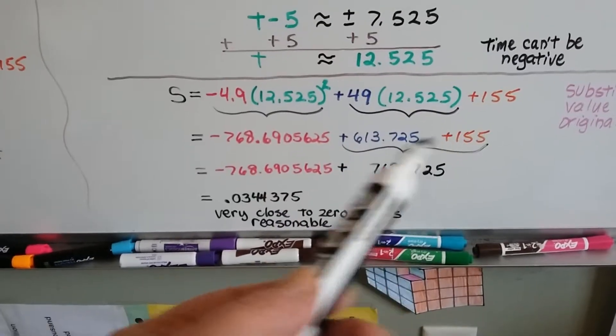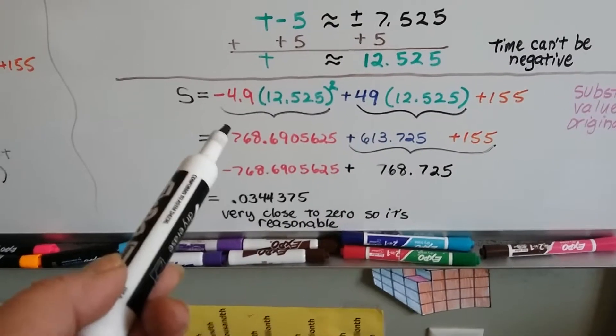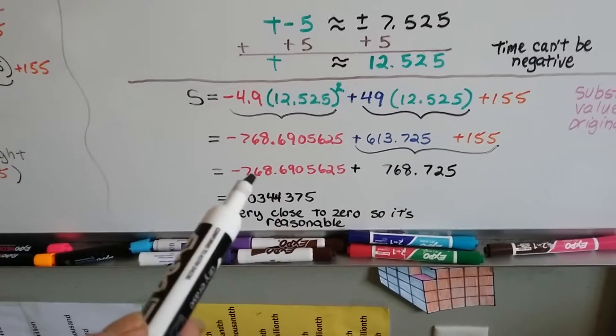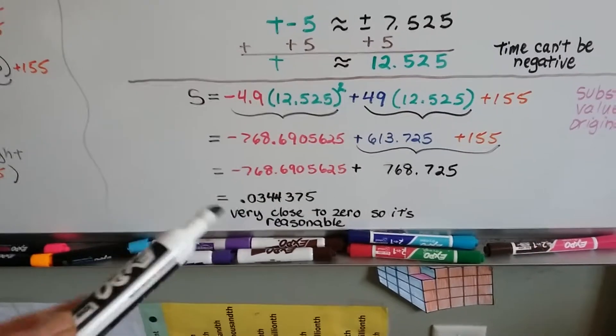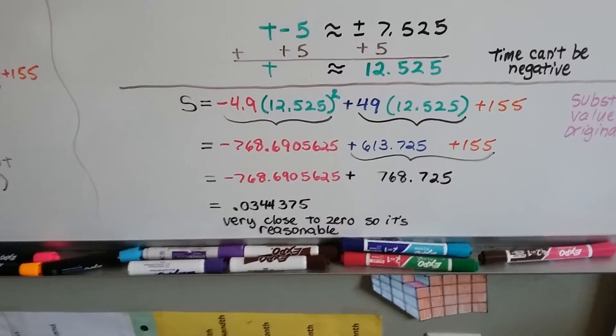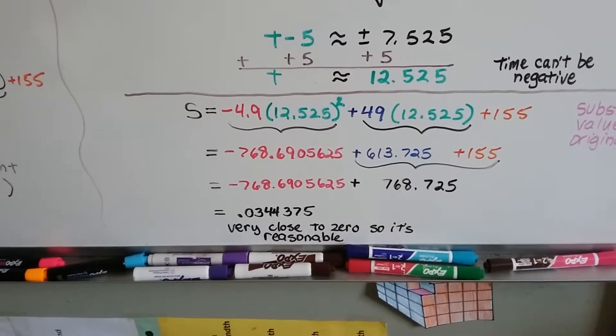When we add these two together, which is easier because that's a negative, we get 768.725. When we add it to this negative decimal, we get .0344375. That's really close to zero, so it's reasonable.